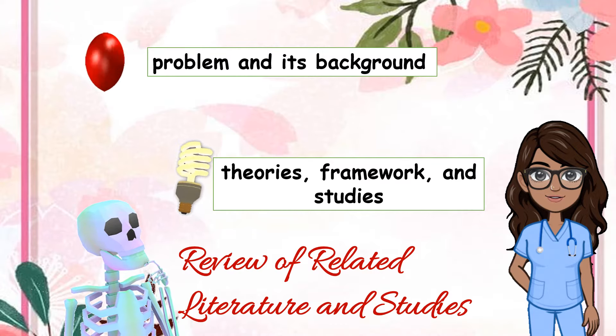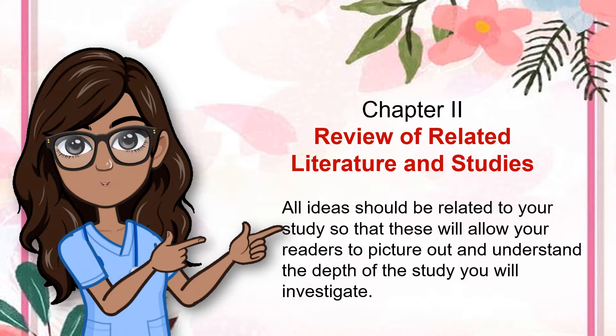Chapter 2 is intended for your review of related literature and studies. All ideas should be related to your study so that readers can picture out and understand the depth of the study you will investigate. For example, if your study is concerned with the study habits of students, you will select relevant literature and studies that support your own work. In this lesson, you will learn how to conduct literature review as a systematic process — starting from selecting potential sources, applying various strategies in getting important ideas, and ending with the synthesis of all relevant ideas gathered for your research work.